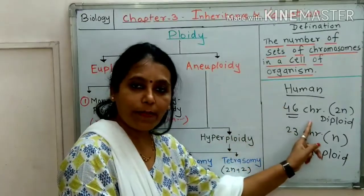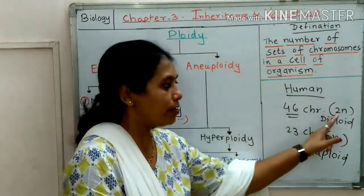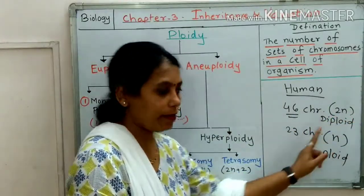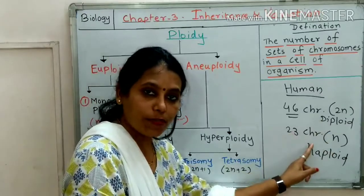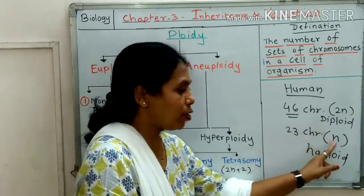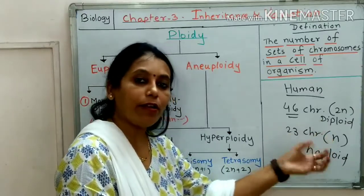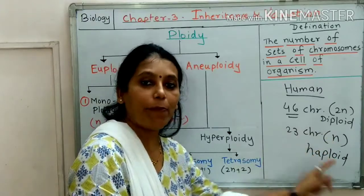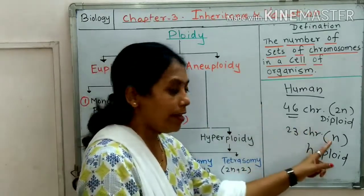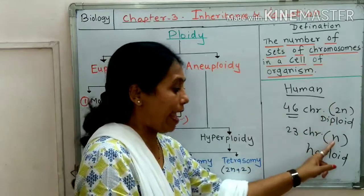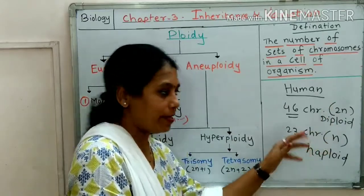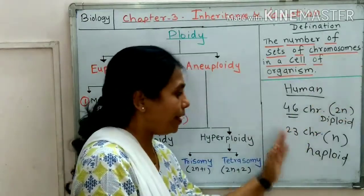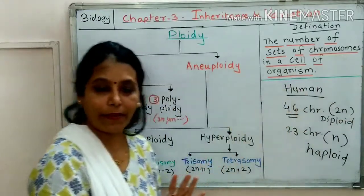46 chromosomes — the condition is called 2N, diploid. 23 chromosomes — the condition is called N, haploid. N stands for number. If you compare: N means half the chromosomes are present, and 2N means exactly double the chromosomes are present.